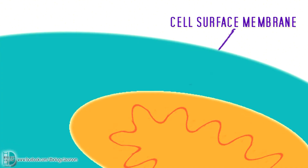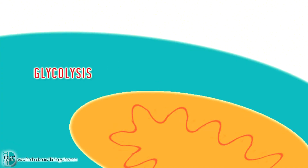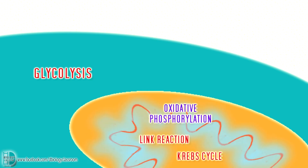This is a eukaryotic cell. Glycolysis occurs in the cytoplasm. Link reaction and Krebs cycle occur in the matrix of the mitochondrion. The components needed for oxidative phosphorylation are found on the inner membrane of the mitochondrion.